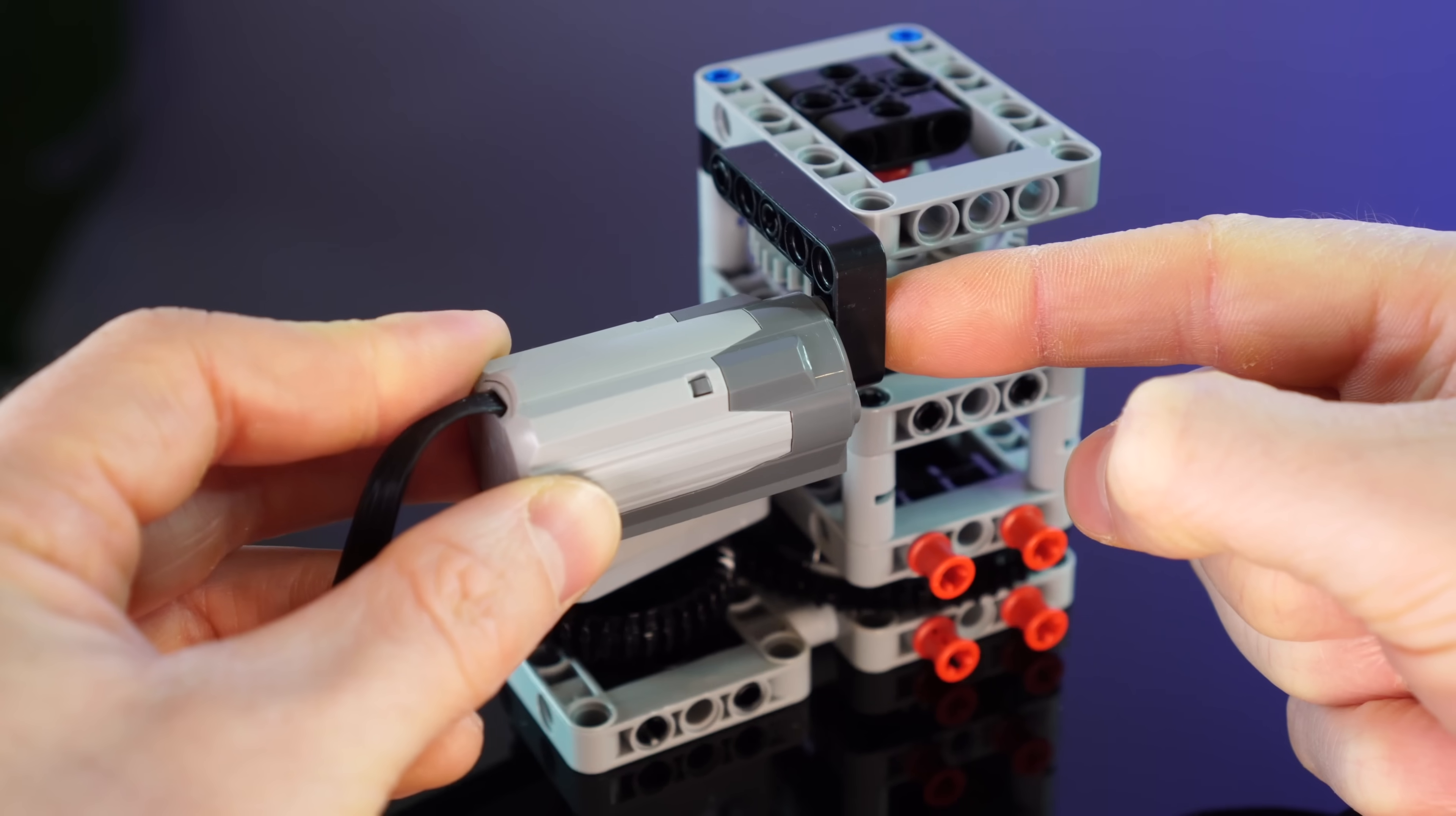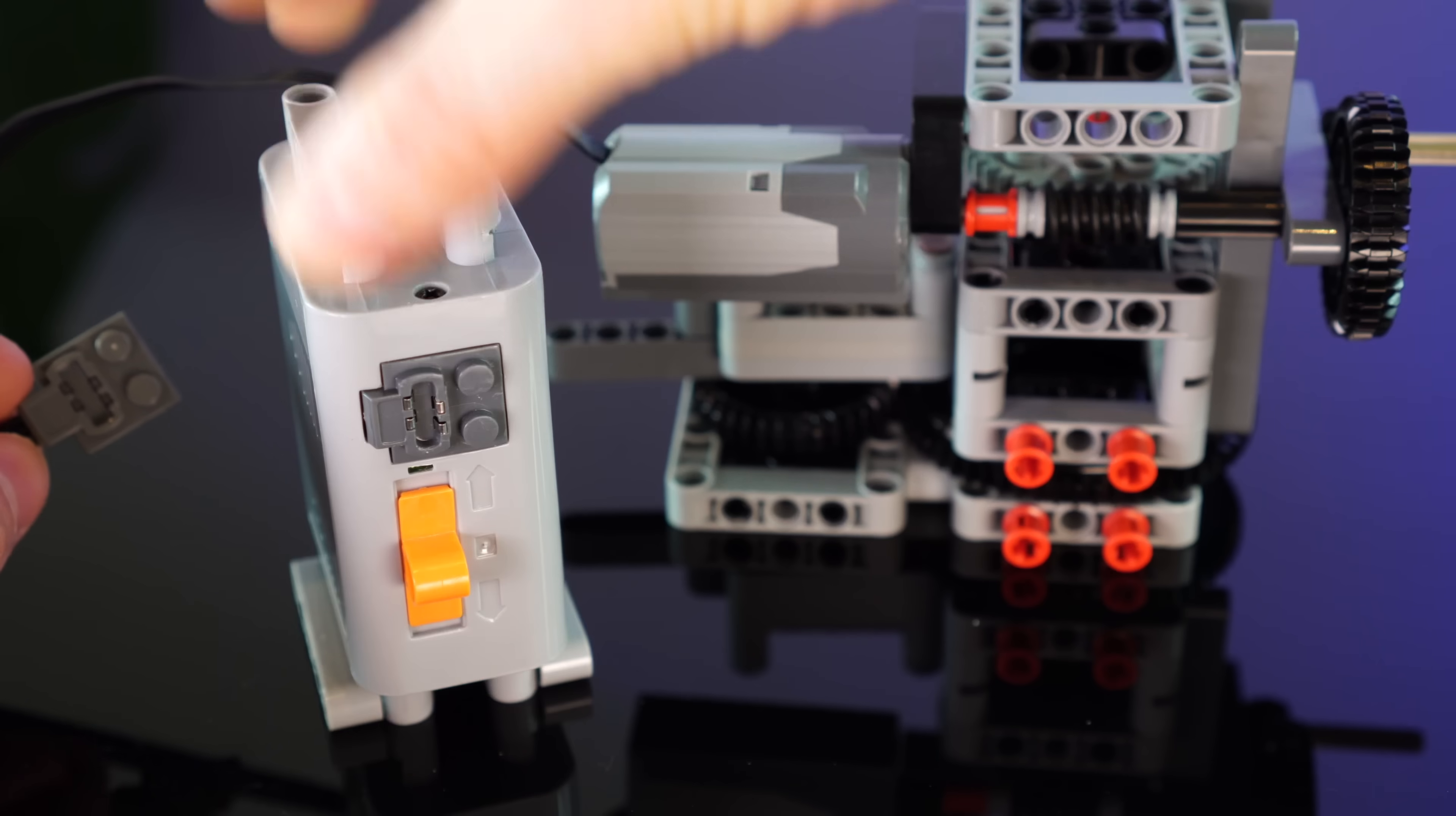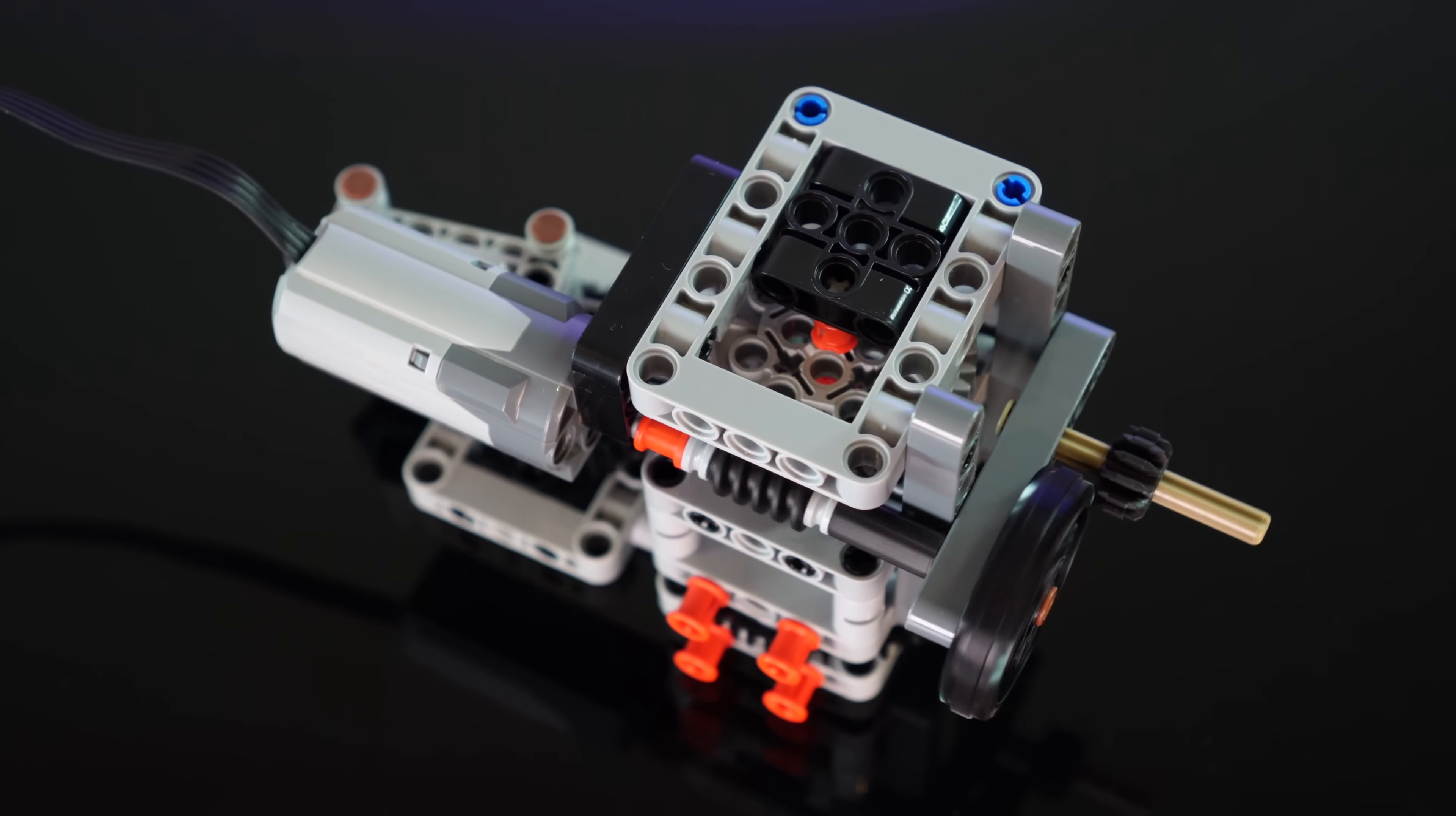Next we attach the motor and a worm gear will drive the gear to the oscillator. Once we secure it, let's give it some power and test it out. Voila! By the way, if you'd like to see more of these crazy Lego experiments, please feel free to like or subscribe. Cheers!